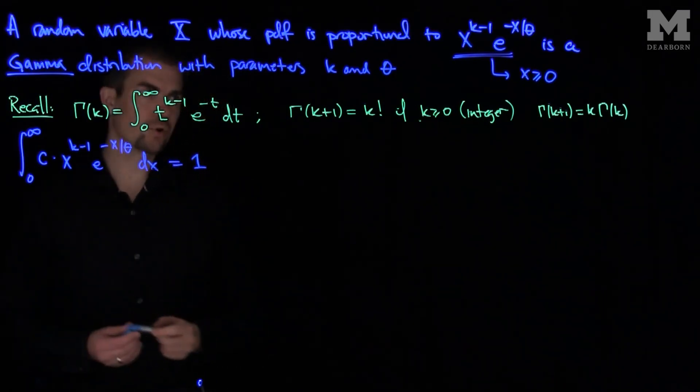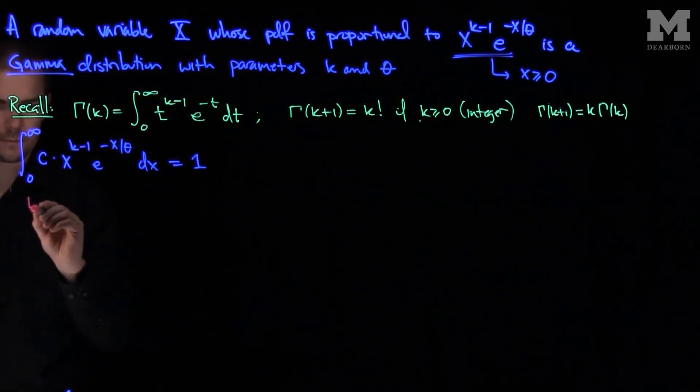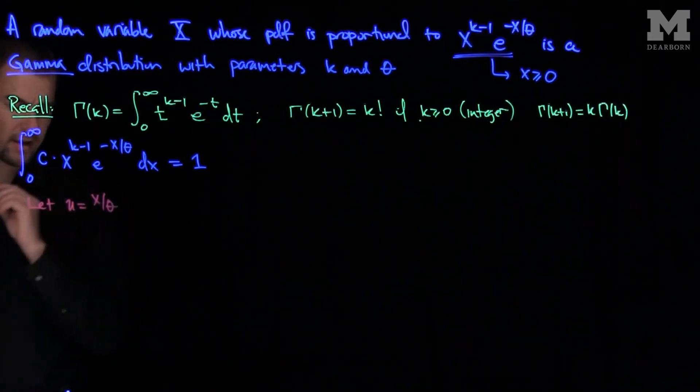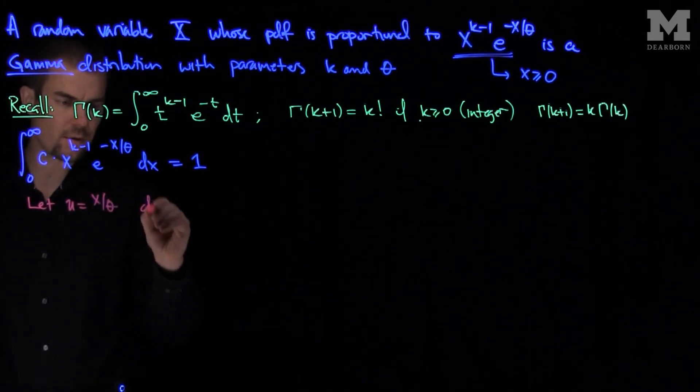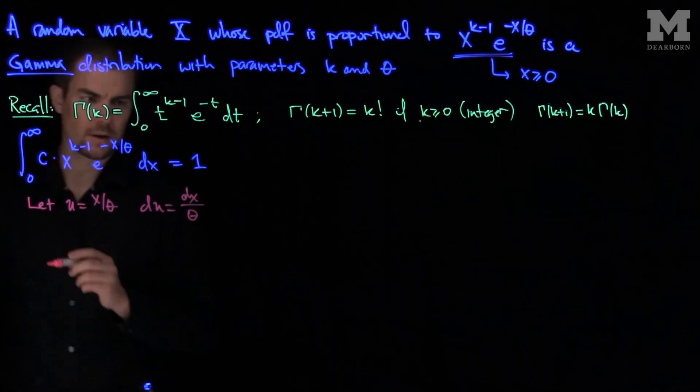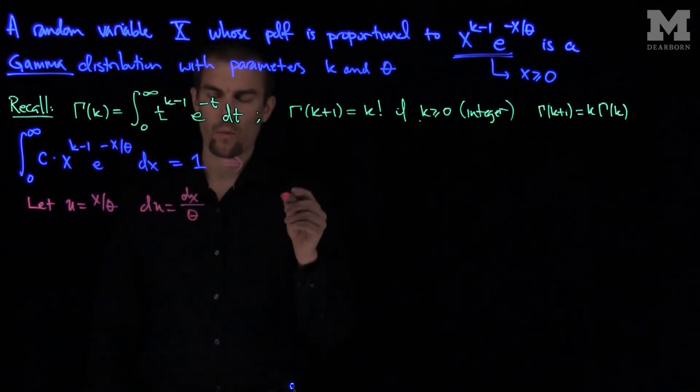And so what we'll do is make a substitution. What we can do is let u be x over theta. Then du is going to be dx over theta. And so what we can say is we can say that this equation will now imply what?